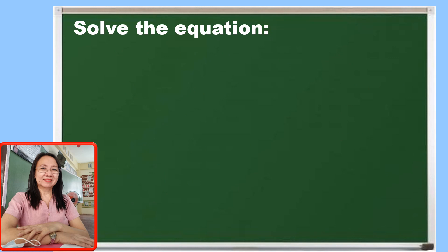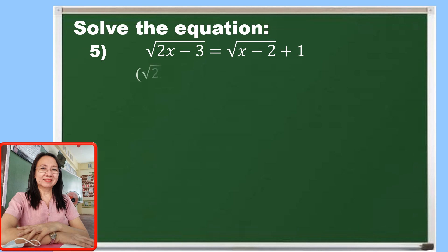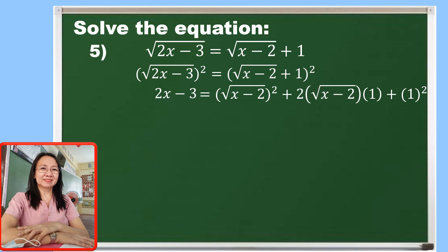Now let's get a deeper understanding of the process. For number 5, our given is the square root of 2x minus 3 is equal to the square root of x minus 2 plus 1. Since the radicals are separated on the left and right side, let us square both sides. The right side expands using the square of a binomial: the square root of x minus 2 squared, plus 2 times the product of the square root of x minus 2 and 1, plus 1 squared.